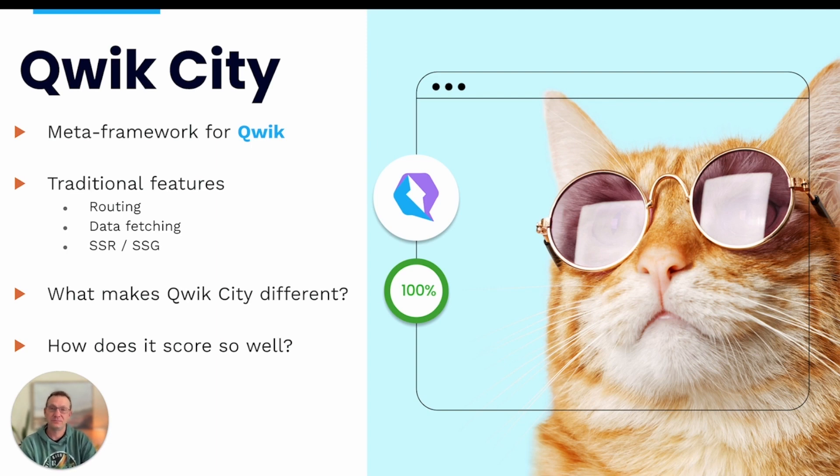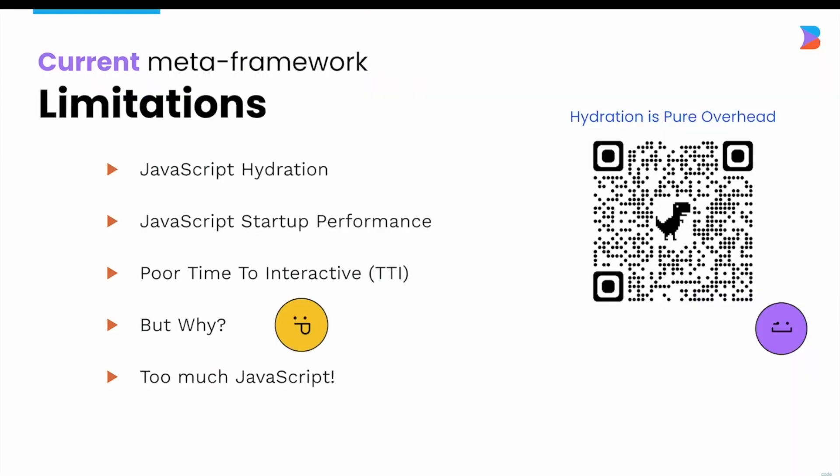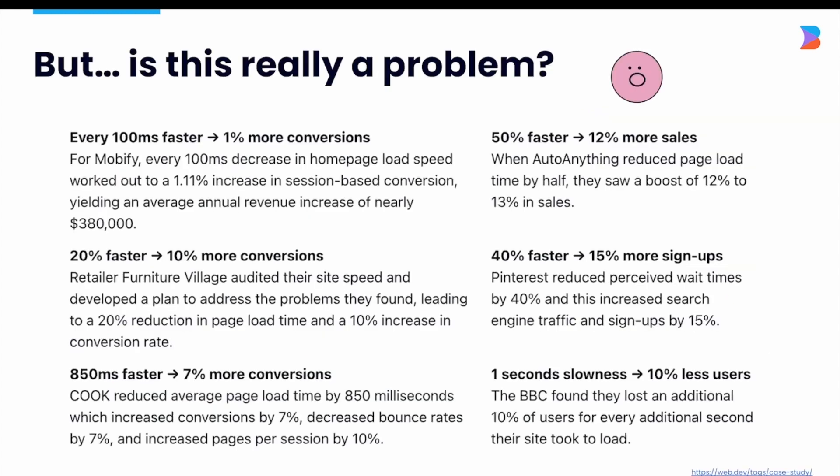A limitation commonly seen in many of today's meta frameworks is their poor time to interactivity, or TTI. The amount of time it takes for the page to become interactive can often be attributed to the underlying framework's use of hydration and its heavy reliance on JavaScript to get the app up and running. The low-level frameworks have a lot of baggage which the meta frameworks have to deal with.